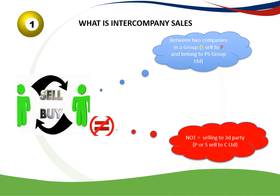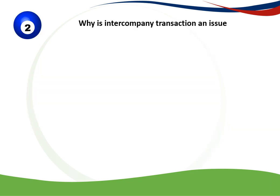And when will it not be an IntraGroup Transaction? It's when P or S sell to someone else outside of the group — for example, C Limited. So to answer the first question: Intercompany Sales is a transaction between two entities inside the same group.